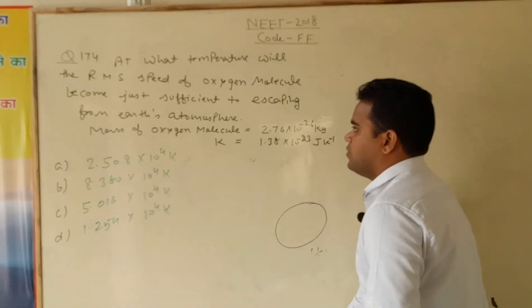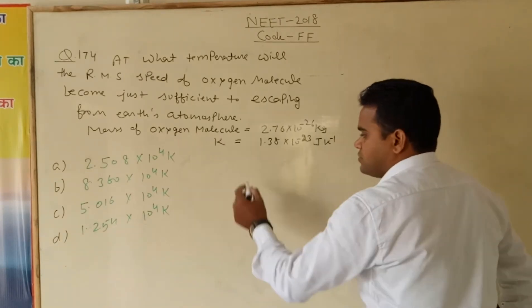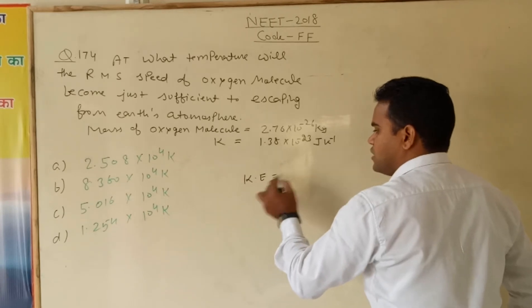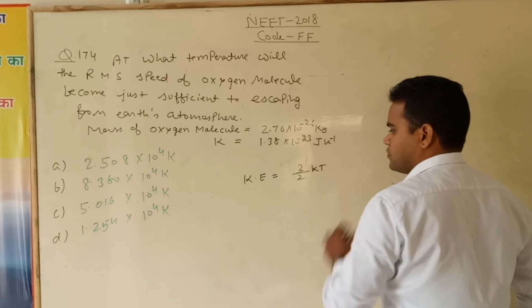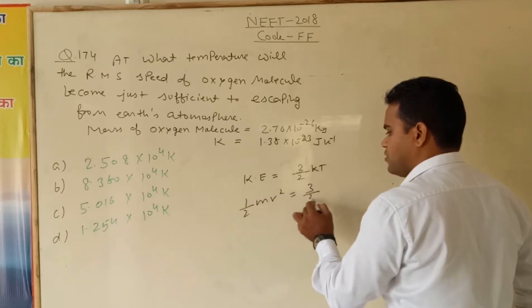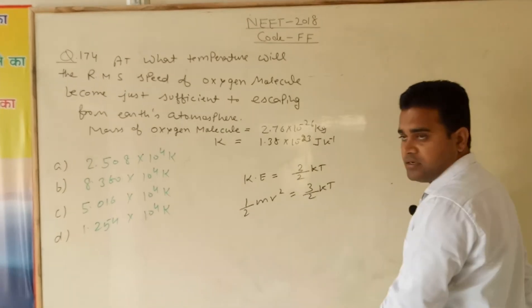To leave from here, what temperature will we require? It's a simple straightforward question. The kinetic energy, that is equal to 3 by 2 kT, equals half mv squared, that is 3 by 2 kT.